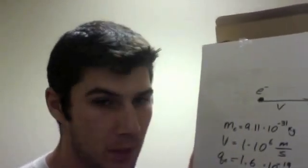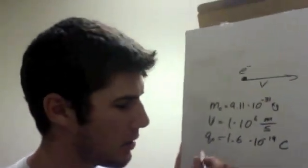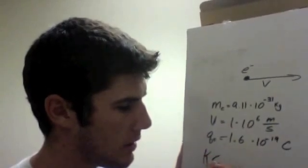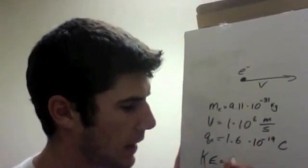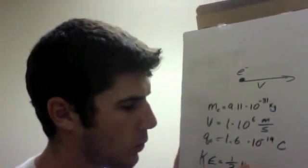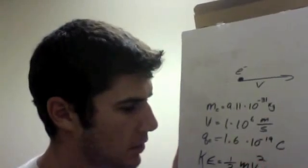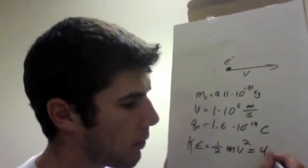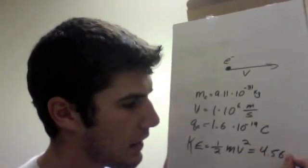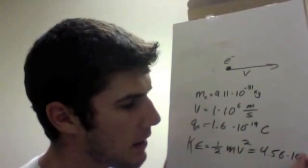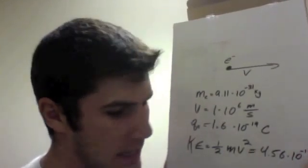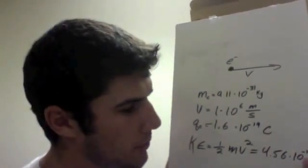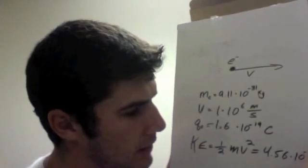So first we're going to find the kinetic energy, which is easy enough to do. We know from mechanics that that's going to be 1 half m v squared, which when you plug everything in gives you 4.56 times 10 to the negative 19th joules.